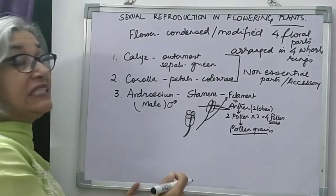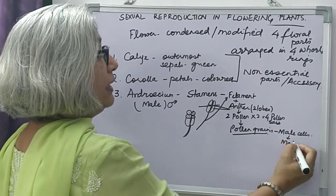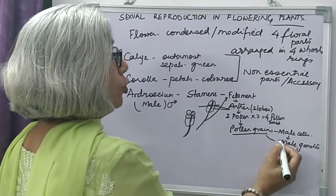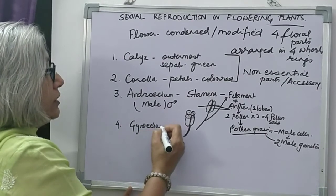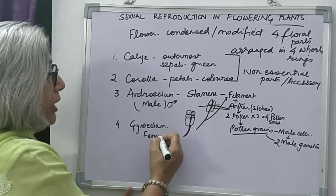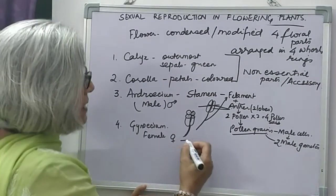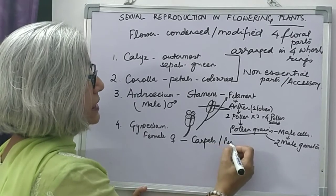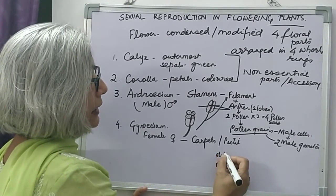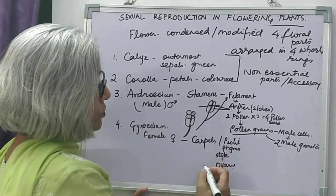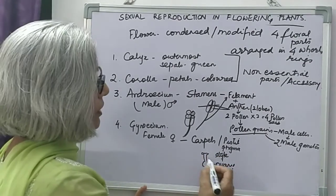Pollen grains are the male cells — they produce the male gametes. Each pollen grain produces two male gametes. The fourth part is the gynoecium, the innermost part and the female part of the flower. It is made up of carpels or pistils. Each carpel has a basal swollen ovary, a slender style, and an expanded stigma, all present on the thalamus.